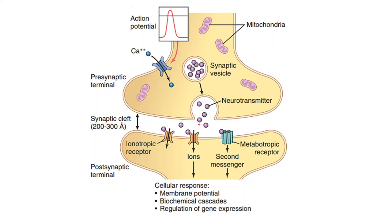Since neurotransmitters cannot pass through the membrane of the postsynaptic cell, they are unable to interact directly with the intracellular biochemical processes. So their action has to be mediated by certain receptors, and through these receptors the neurotransmitters are able to bring changes in the permeability of the membrane or in the biochemistry of the postsynaptic cell. That is the main reason why these receptors are required.